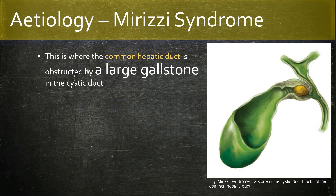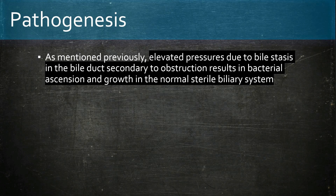As explained earlier, elevated pressures due to biliary stasis secondary to obstruction leads to the free movement of enteric bacteria up through the ampulla of Vater. This results in sepsis or liver abscesses when pressures in the biliary system are high enough to allow eventual contact with the blood. The most common enteric bacteria involved are E. coli, Klebsiella species, and Pseudomonas species.